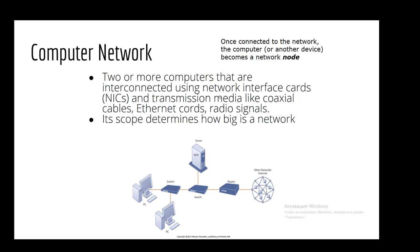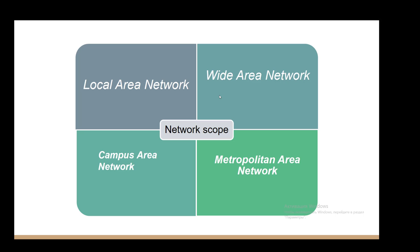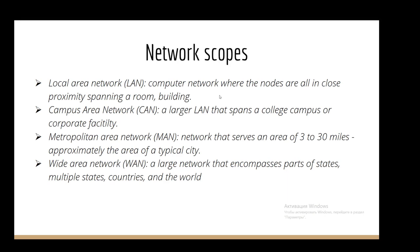In this picture you can see the general idea of computer network itself. It divides into four big parts. First of all, it's local area network; second part, wide area network; third, campus area network; and the fourth, metropolitan area network. So now let's give definition to each network. Local area network is a computer network where the nodes are all in close proximity, spanning a room or building.